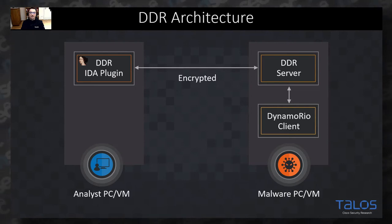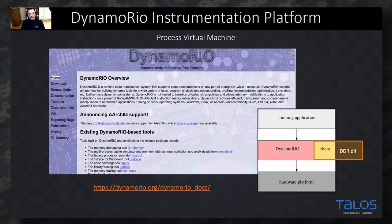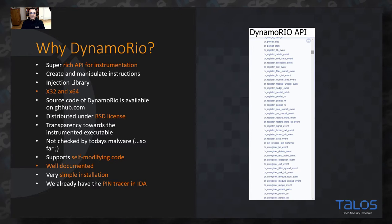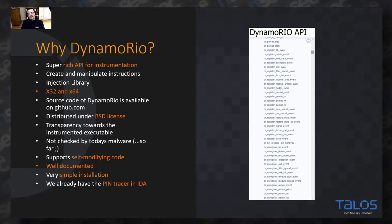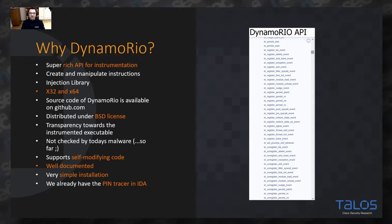So you have two options: either run it manually on the command line or do everything from the IDA plugin, where the whole process is fully automatic. I'm using the DynamoRIO instrumentation platform for all the instrumentation. DynamoRIO provides an extremely rich API with a lot of different functions that help when implementing something like this. You don't have to think about underlying issues for different architectures — whether it's x64 or x32, DynamoRIO can instrument the binary no matter what kind of sample you have.